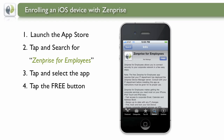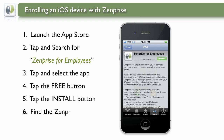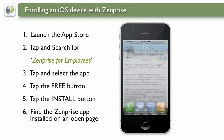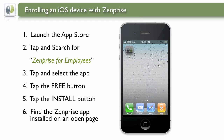Then tap the Free button in the application page, and then the Install button. This will begin the download and installation of the ZenPrize app, and place it on your home screen in a location where you can later retrieve it and launch it for use.